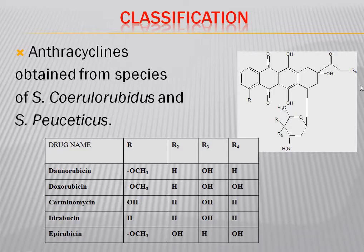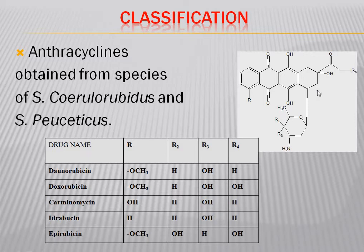There is only one difference between the structures of daunorubicin and doxorubicin: a change at the R4 position. At R there is the same methoxy group, at R2 the same hydrogen, at R3 the same hydroxy group, but at R4 daunorubicin has hydrogen while doxorubicin has a hydroxy group. In carminomycin, there is an OH group at R, hydrogen at R2, a hydroxy group at R3, and hydrogen at R4.